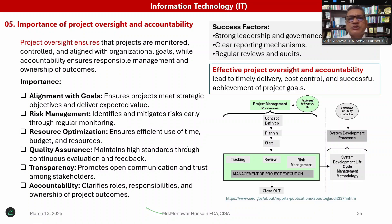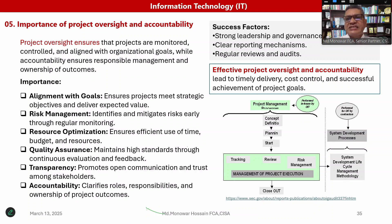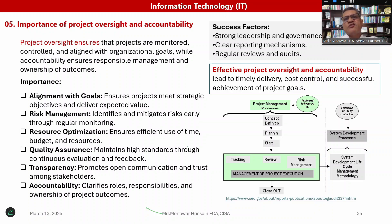Risk management — identifying and mitigating risks early through regular monitoring — is also part of the importance of project oversight and accountability, as is resource optimization, ensuring efficient use of time, budget, and resources. Quality assurance requires maintaining high standards through continuous monitoring of feedback. Transparency is also required for oversight and accountability because it promotes open communication and trust among stakeholders. Accountability requires clearly defined roles, clarifying responsibility and ownership of project outcomes. Success factors include strong leadership and governance, clear reporting mechanisms, and regular reviews and audits.